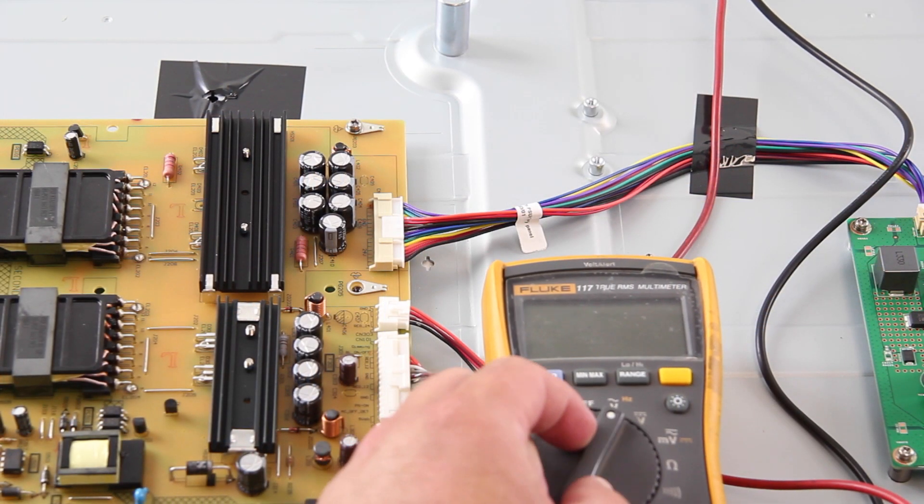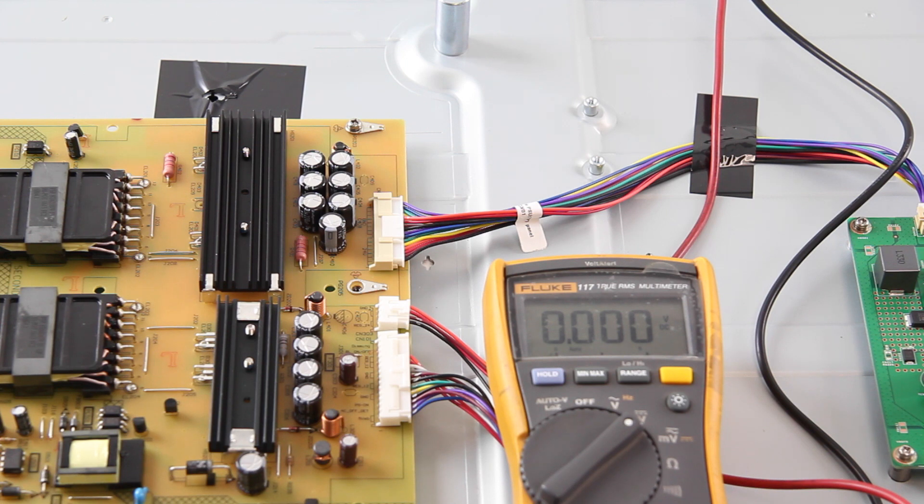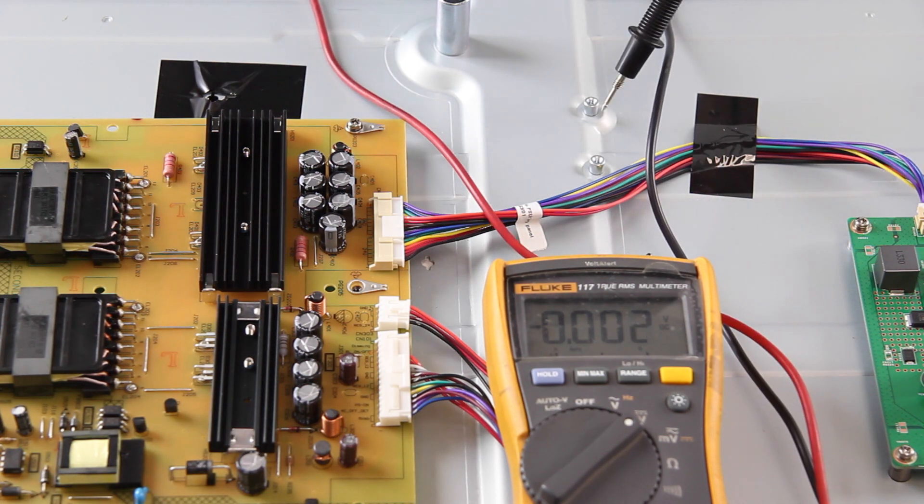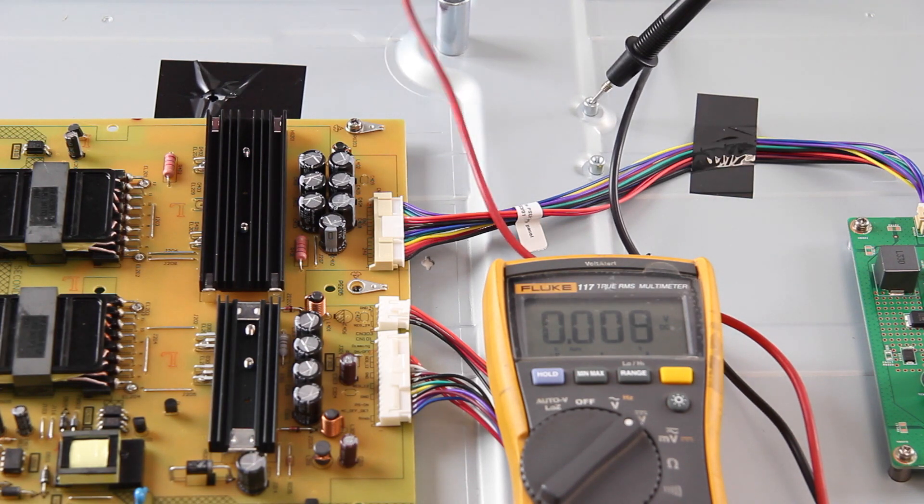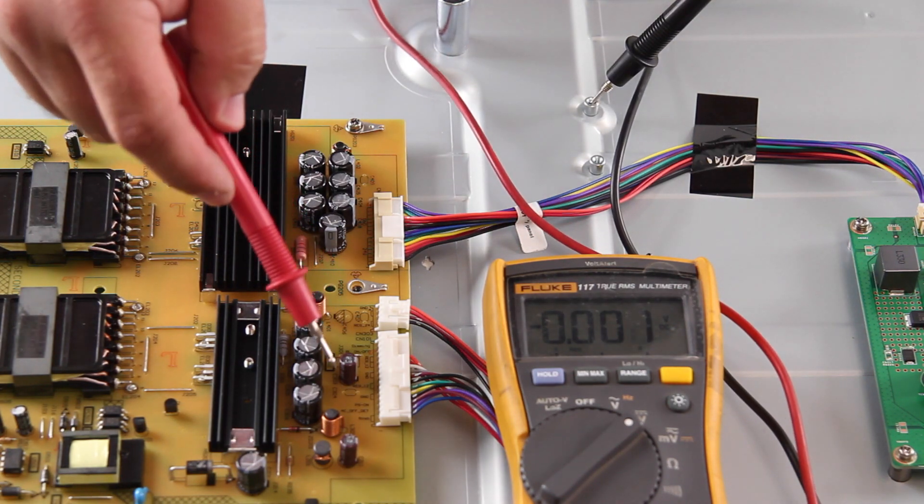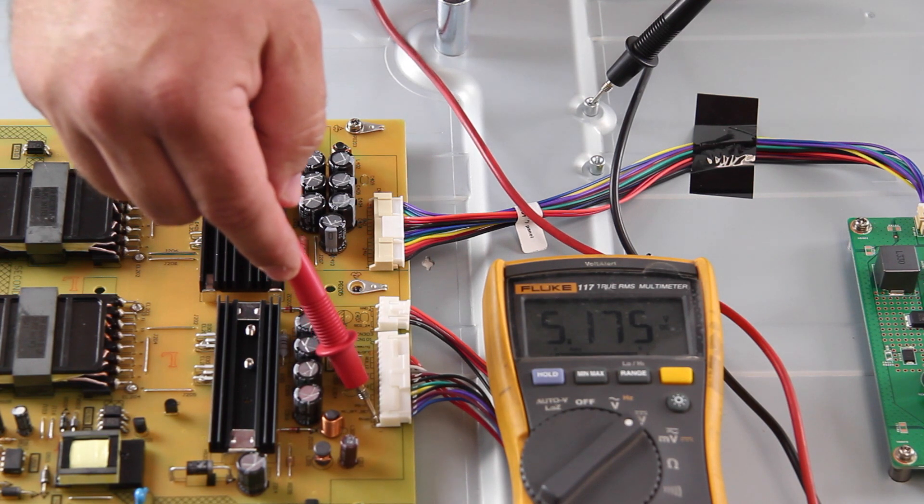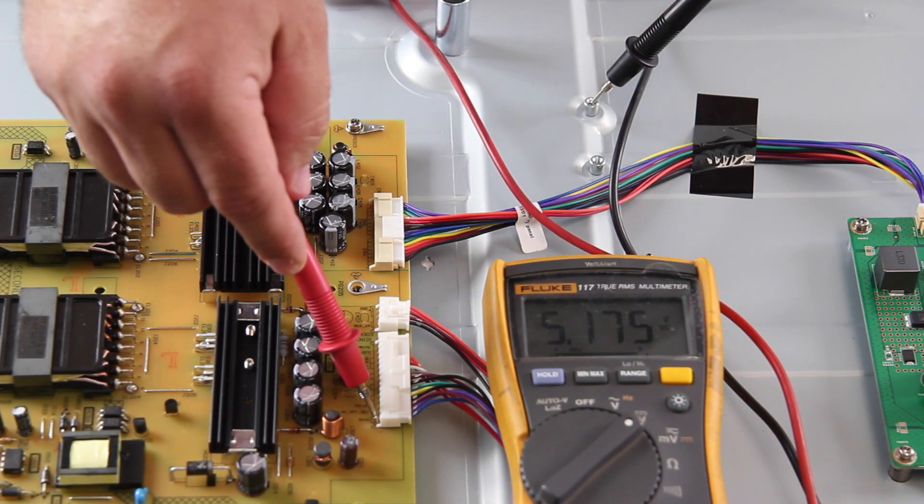Here we are showing the multimeter in action, testing the voltage on the power supply. We have the test lead on the pin and the ground lead on the metal part of the chassis.